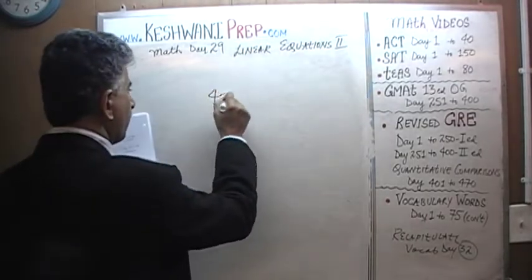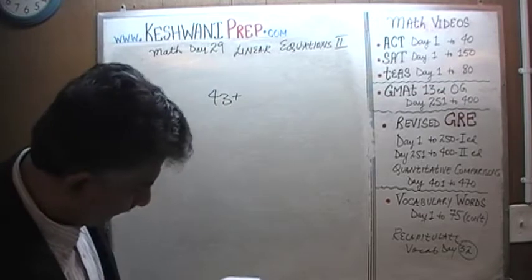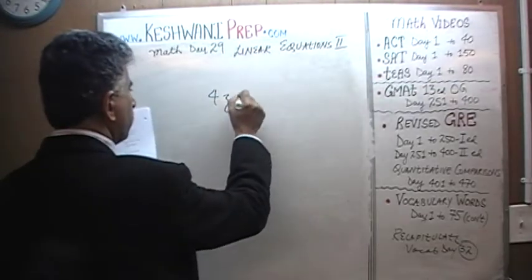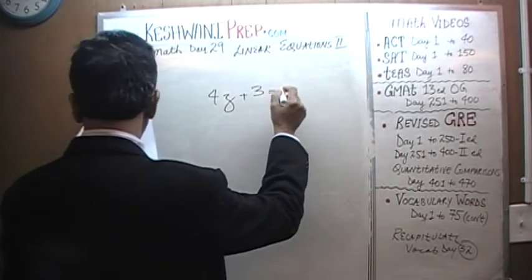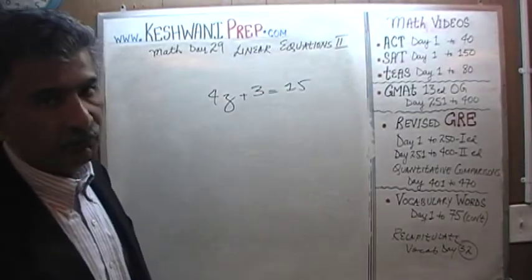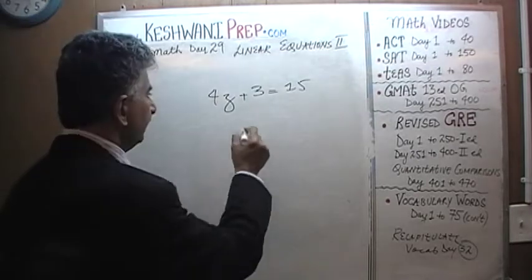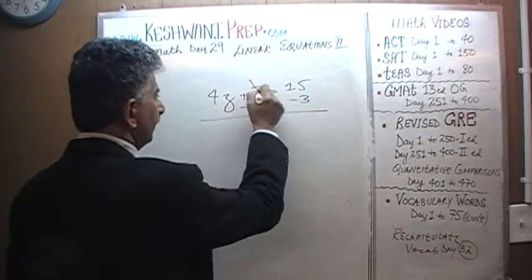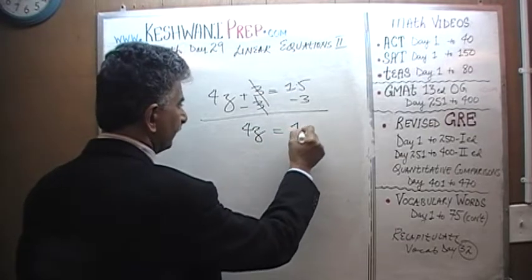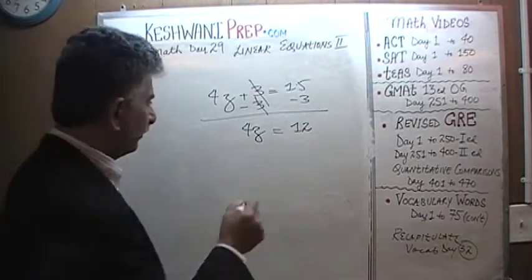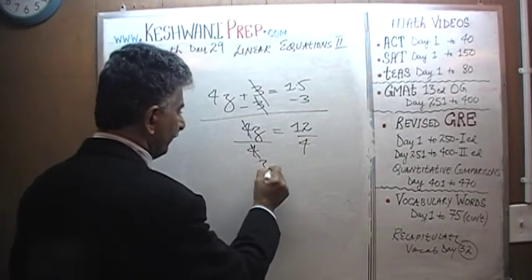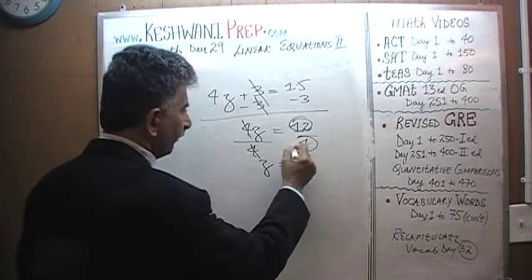4z plus 3 equals 15. Subtract 3 from both sides. 3 drops out and 4z equals 15 minus 3 which is 12. Divide both sides by 4. 4 is going to drop out and z equals 12 divided by 4 which is 3.